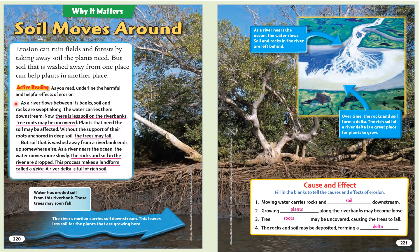But soil that is washed away from a riverbank ends up somewhere else. As a river nears the ocean, the water moves more slowly. The rocks and soil in the river are dropped. This process makes a landform called a delta. A river delta is full of rich soil. Water has eroded soil from the riverbank — these trees may soon fall. The river's motion carries soil downstream, leaving less soil for the plants growing there. As the river nears the ocean, the water slows, and the rocks and soil are left behind. Over time, the rocks and soil form a delta. The rich soil of a river delta is a great place for plants to grow.